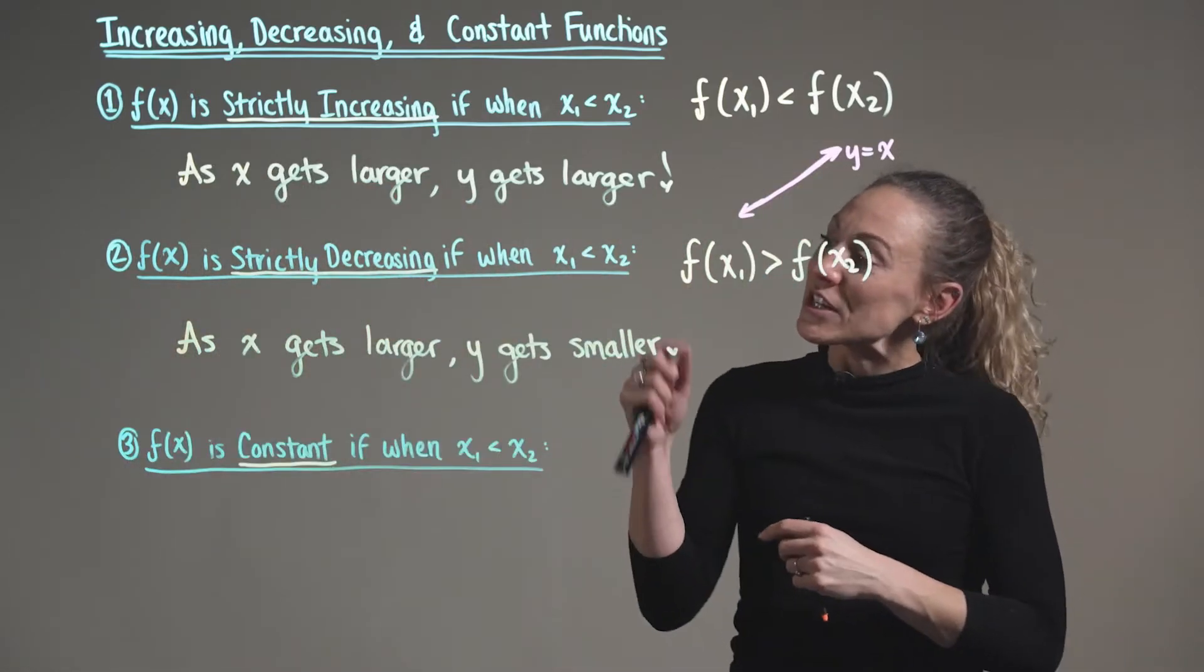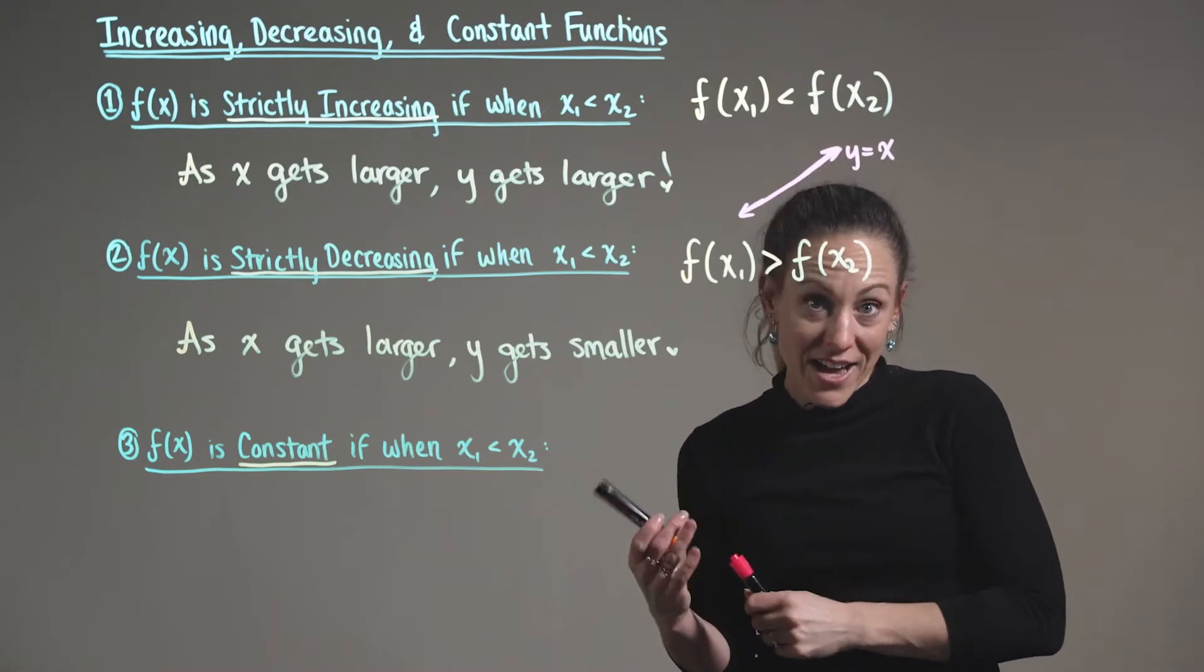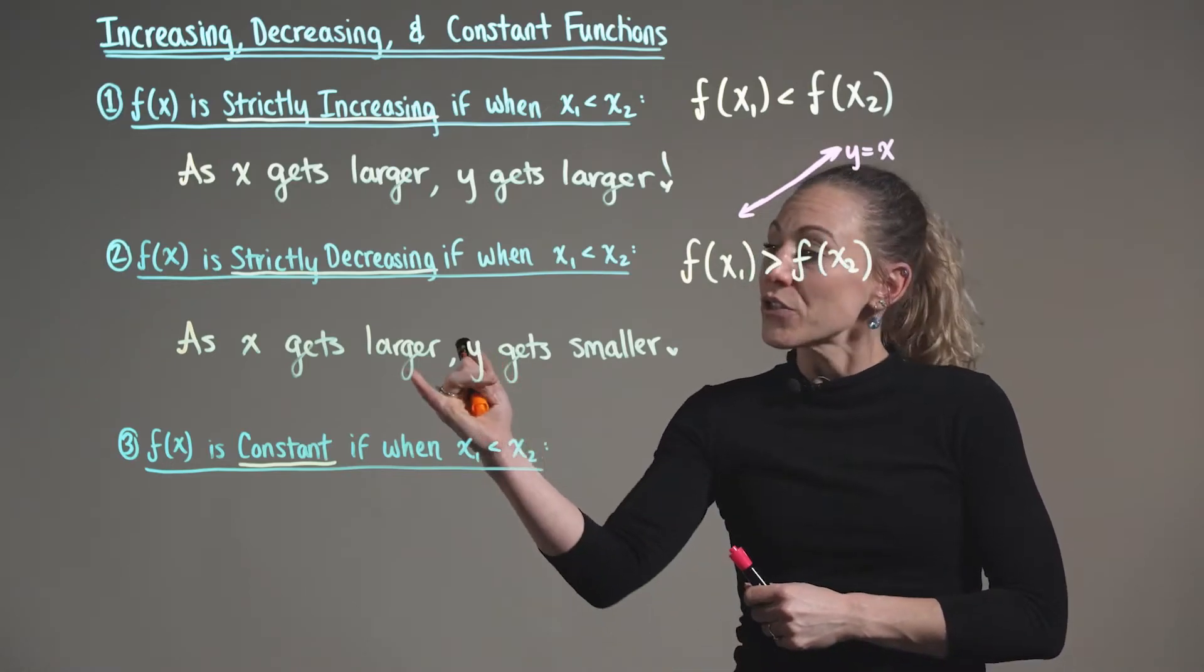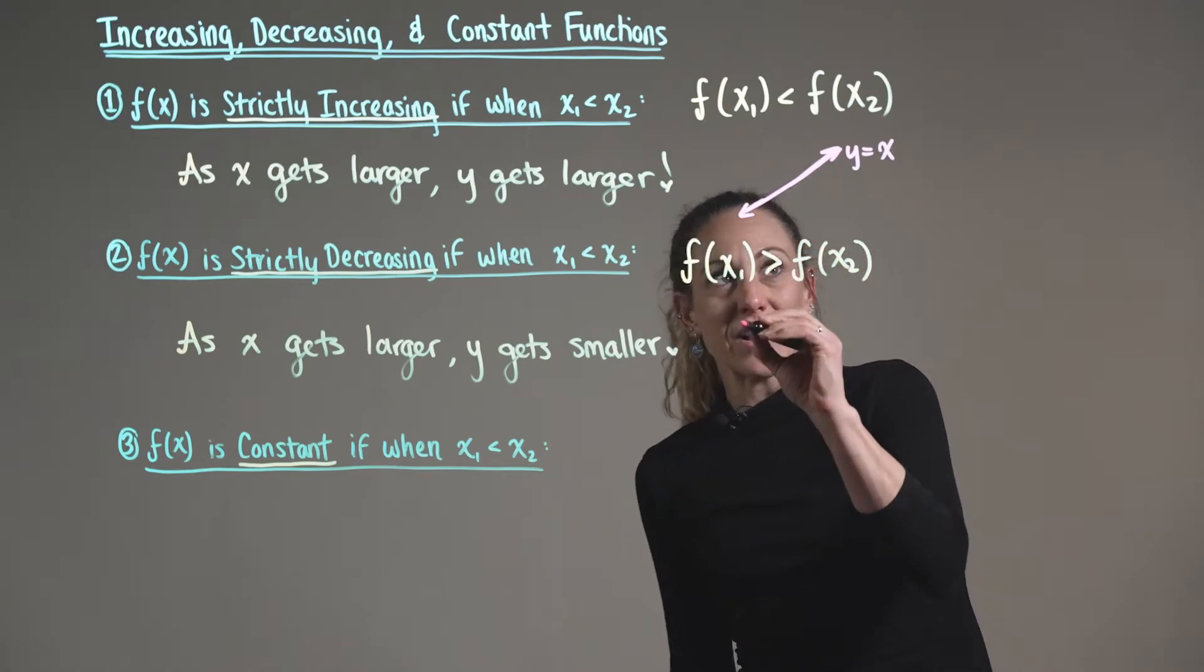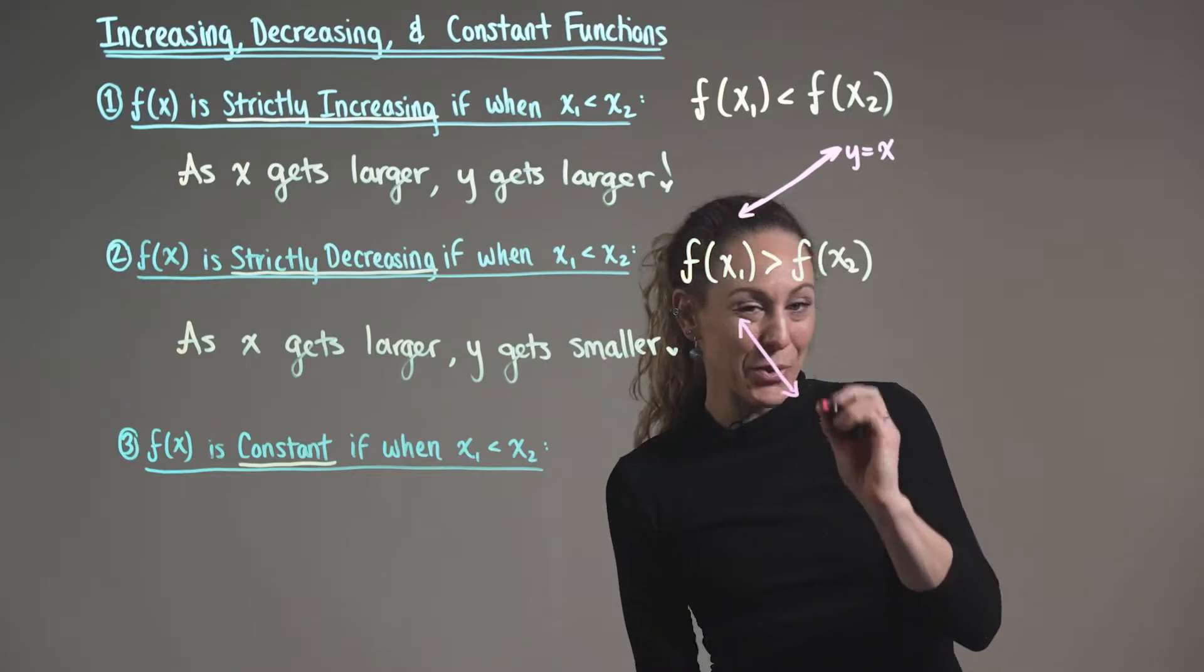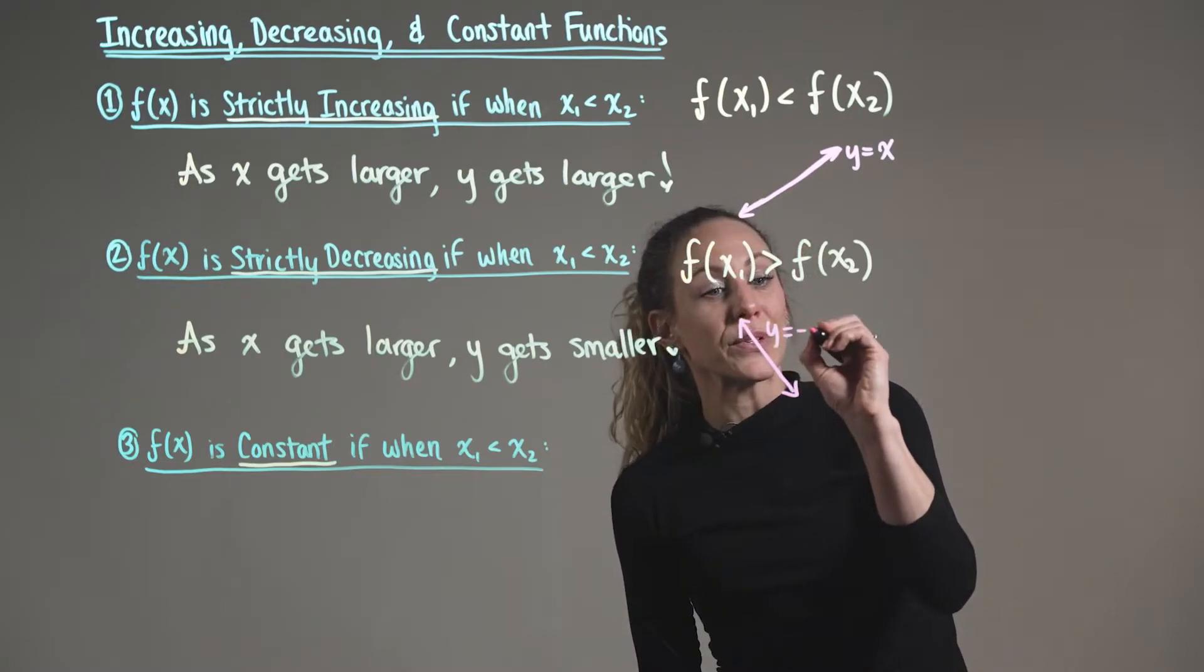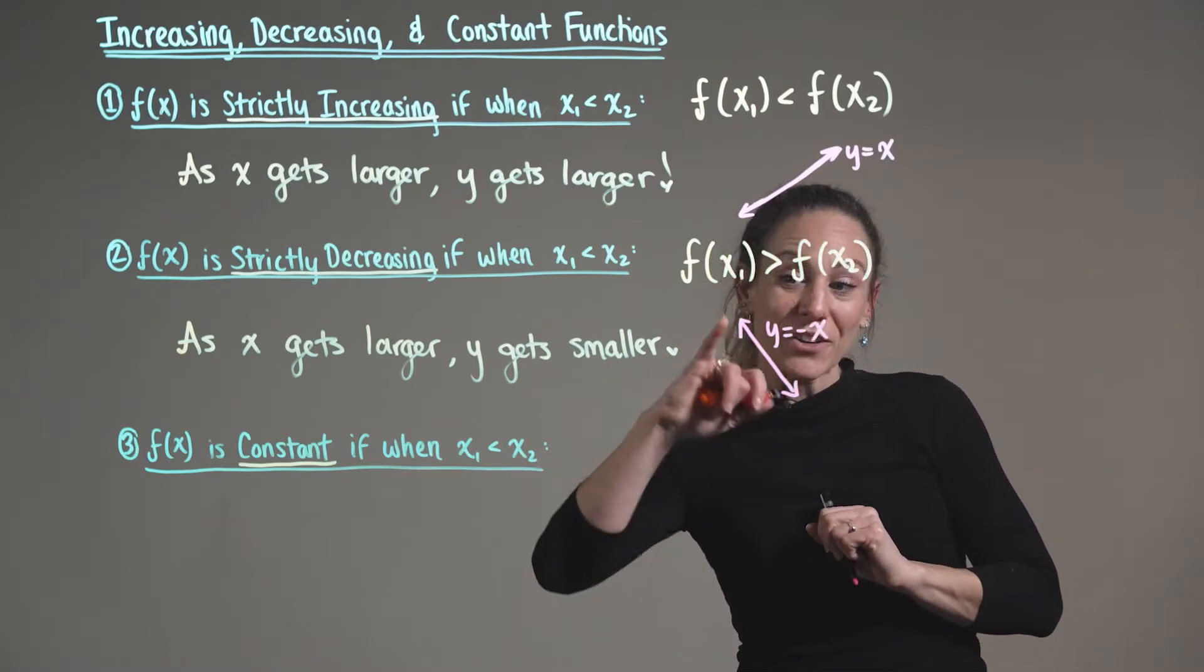So an easy way to interpret a strictly decreasing function is to think that as x gets larger, the y values get smaller. So we can think of the diagonal line with a negative slope, where y is equal to negative x. So all the y values here are decreasing.